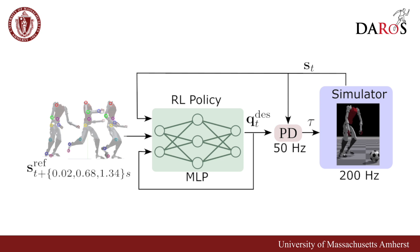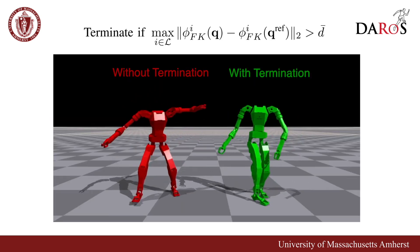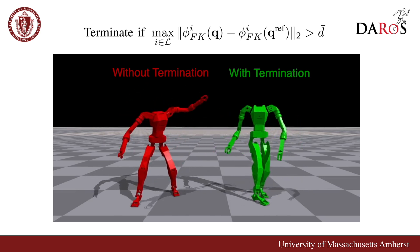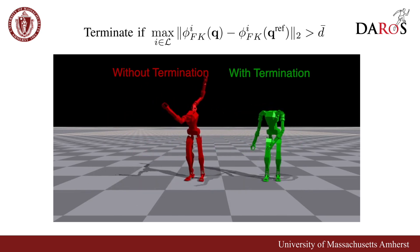Once biomechanically inspired trajectories are obtained, we train a reinforcement learning policy to imitate them in a simulated environment using PPO. The policy takes the desired robot trajectory as input and outputs joint position commands. We train this policy using a motion imitation reward to encourage faithful reproduction of the reference motion. We implement reference-based early termination for efficient exploration, ending episodes when the robot deviates significantly from reference.